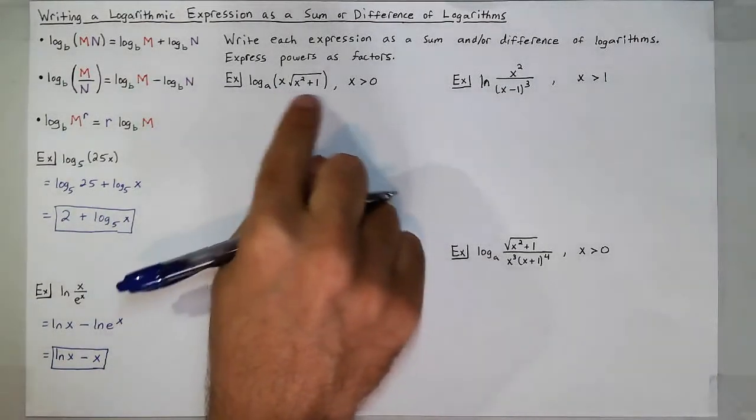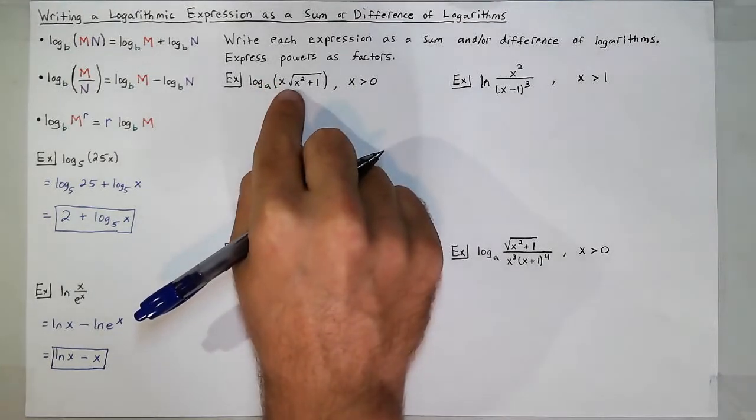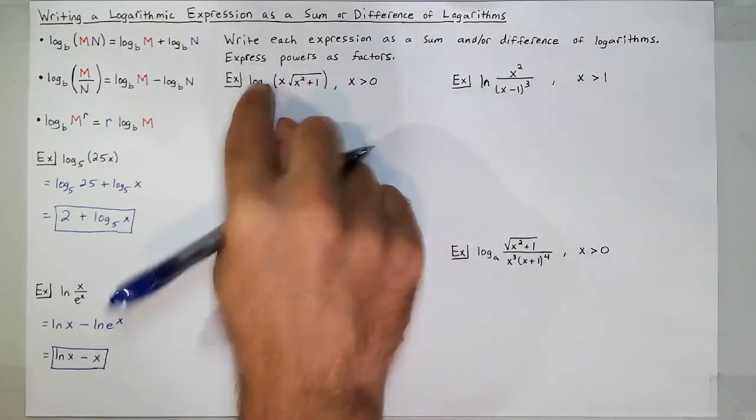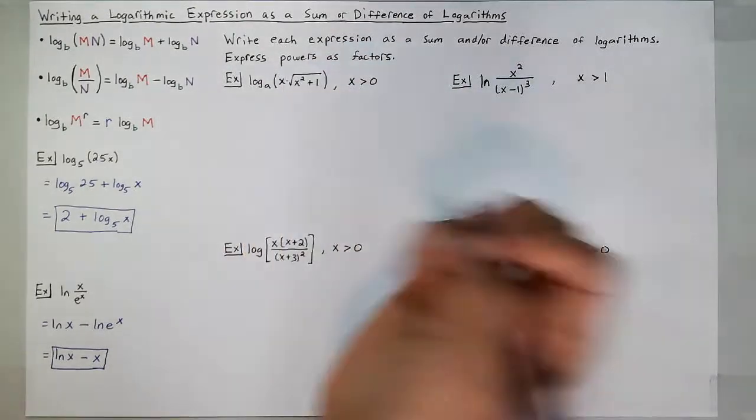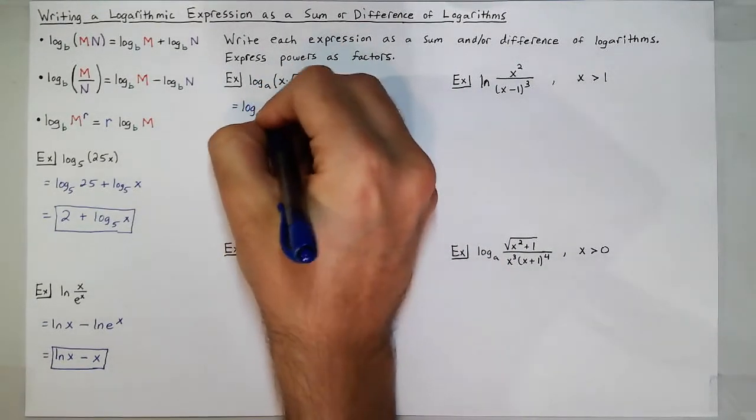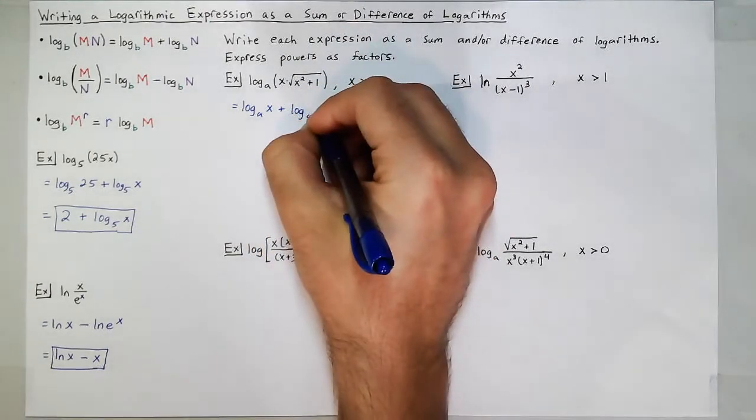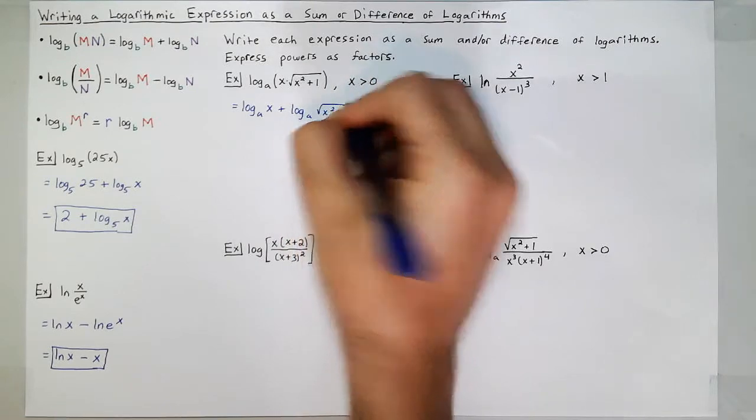Right here, I have log base a of x times the square root of x squared plus 1, as long as x is greater than 0. This is just the domain for that particular logarithm. So I see I have multiplication going on, so I can write this as log base a of x plus log base a of the square root of x squared plus 1.